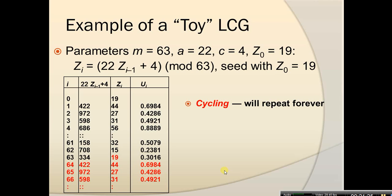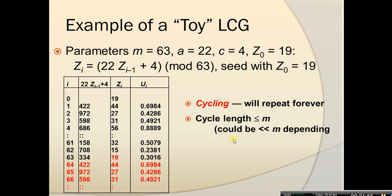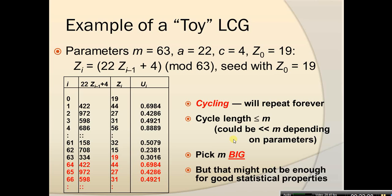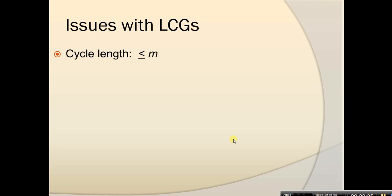What you see here is cycling — this will repeat forever, generating nothing new. The cycle length is always less than or equal to M for a linear congruential generator. In this case it's exactly M, but sometimes it could be smaller. We want to pick a large M so our cycle length is big, but that might not be enough, because large M still might not satisfy the uniformity and independence properties.